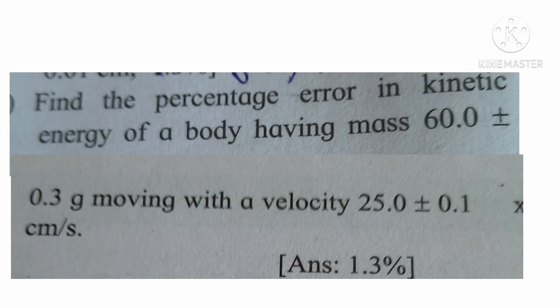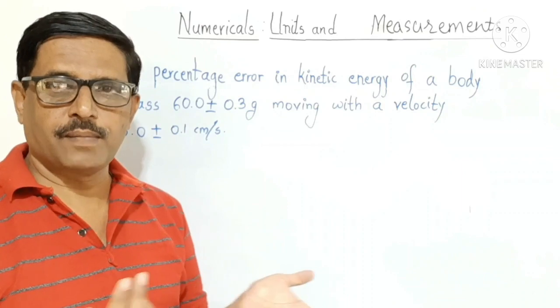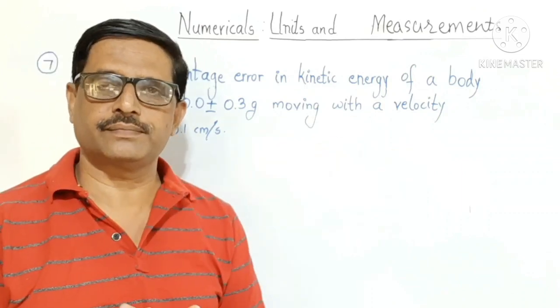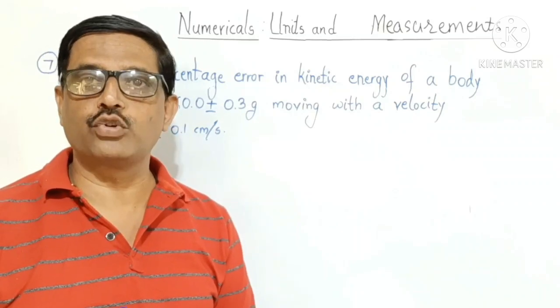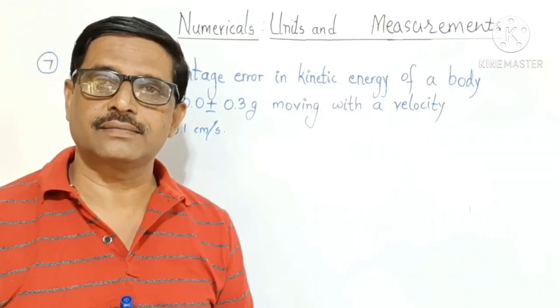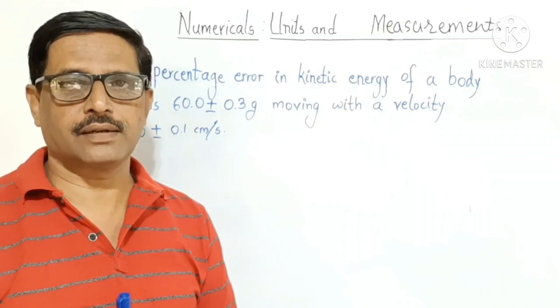Find the percentage error in kinetic energy of a body having mass 60 plus or minus 0.3 gram, moving with a velocity 25 plus or minus 0.1 centimeter per second. This problem is based on error analysis and how to find out the percentage error in a measurement.